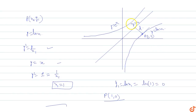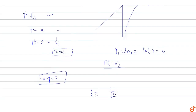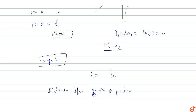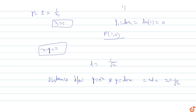Since both graphs are symmetrical about y equals x, the distance between the two graphs is equal to 2d. So the distance between y equals e raised to power x and y equals ln x equals 2d, which equals 2 into 1 upon root 2, giving root 2.